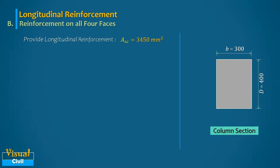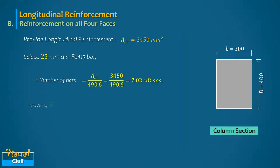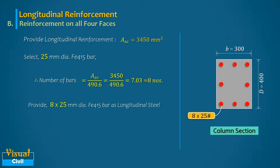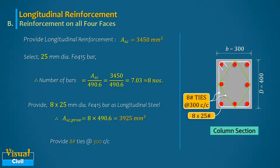Select 25 mm diameter bars. The number of bars required is 8. Provide 8 bars of 25 mm diameter as longitudinal reinforcement at all four faces, giving a total steel area of 3925 mm². Provide lateral ties similar to Case A: 8 mm dia at 300 mm center-to-center.